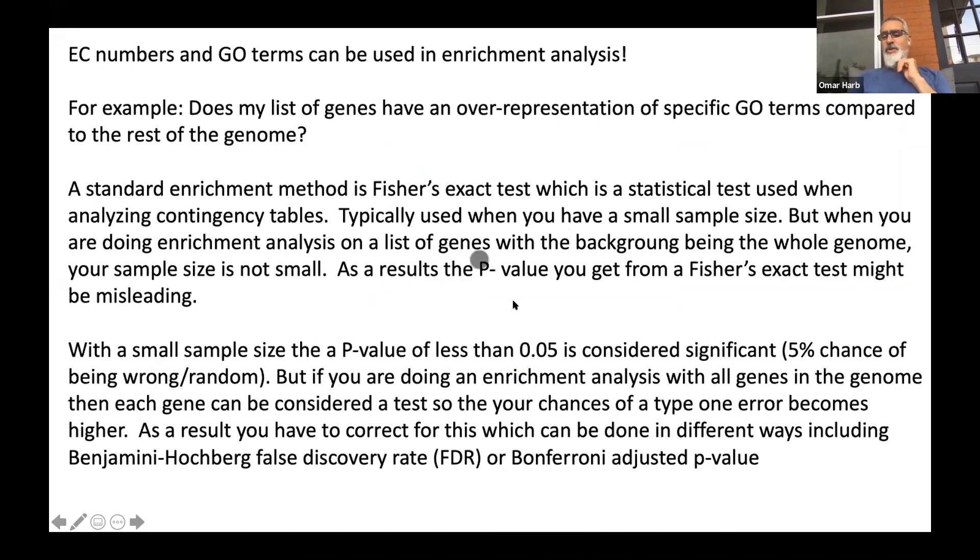So there are different ways to look at GO enrichment. Typically people do what's called a Fisher's exact test. This generates p-values which tells you something about whether what you're seeing is random or potentially real. But often when you have large samples and large number of tests—because every single gene can be considered a test in this case—you have to correct for the p-value. The Fisher's exact test p-value may be misleading because you can have things that look like they have a really high p-value, but really because of the size of the sample, they may actually not be that significant.